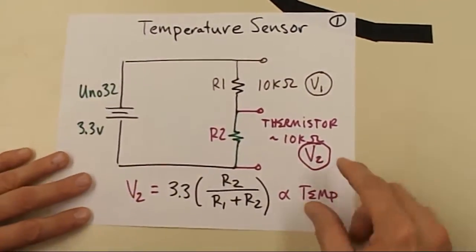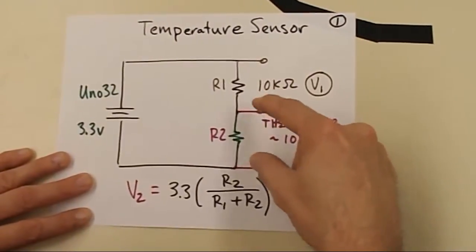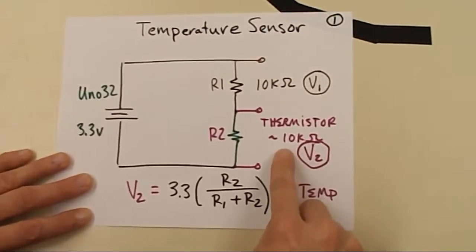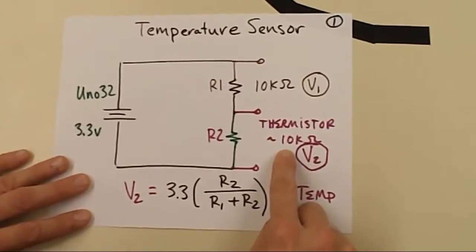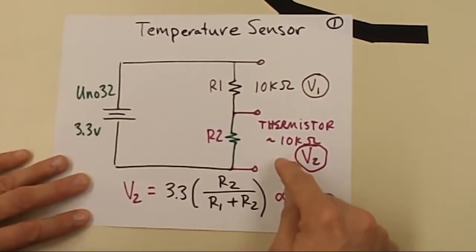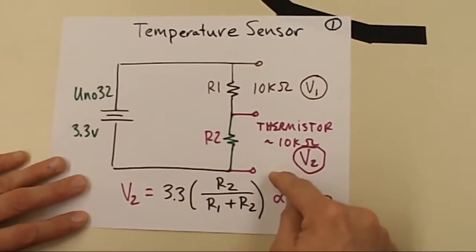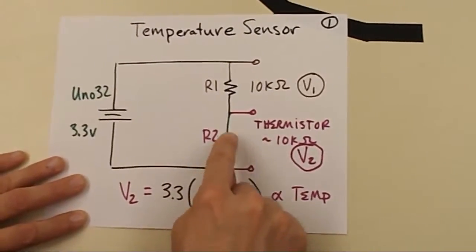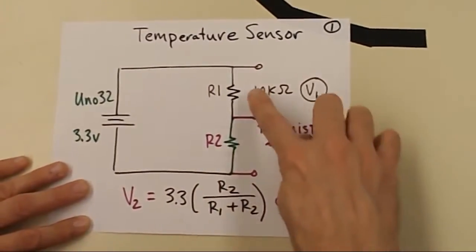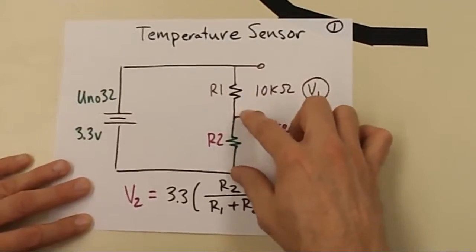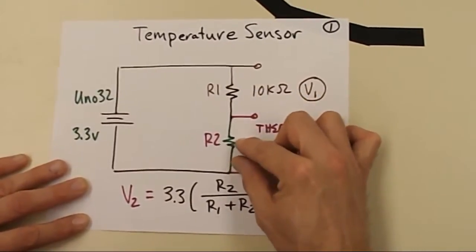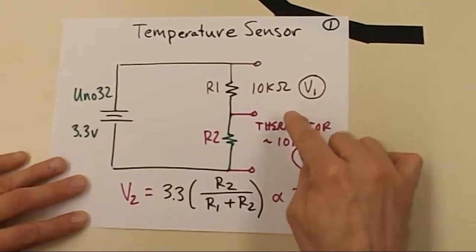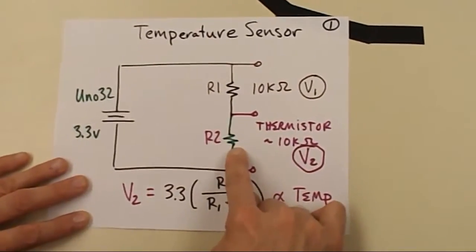So our UNO32 is going to measure the voltage across the thermistor. And remember, this is a negative temperature characteristic device, meaning if the temperature goes up, the resistance goes down. And so one thing to think about, if the resistance of this value goes down and this value remains unchanged, that means the voltage here also goes down. So a temperature rise means the voltage should drop.